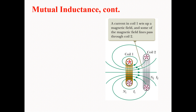Here we have two coils: coil 1 and coil 2. The number of turns in coil 1 is denoted by N1, and the current passing through coil 1 is denoted by I1. Similarly, we have another coil denoted as coil 2, with number of turns N2 and current I2. Current in coil 1 sets up a magnetic field when we pass current through this coil.